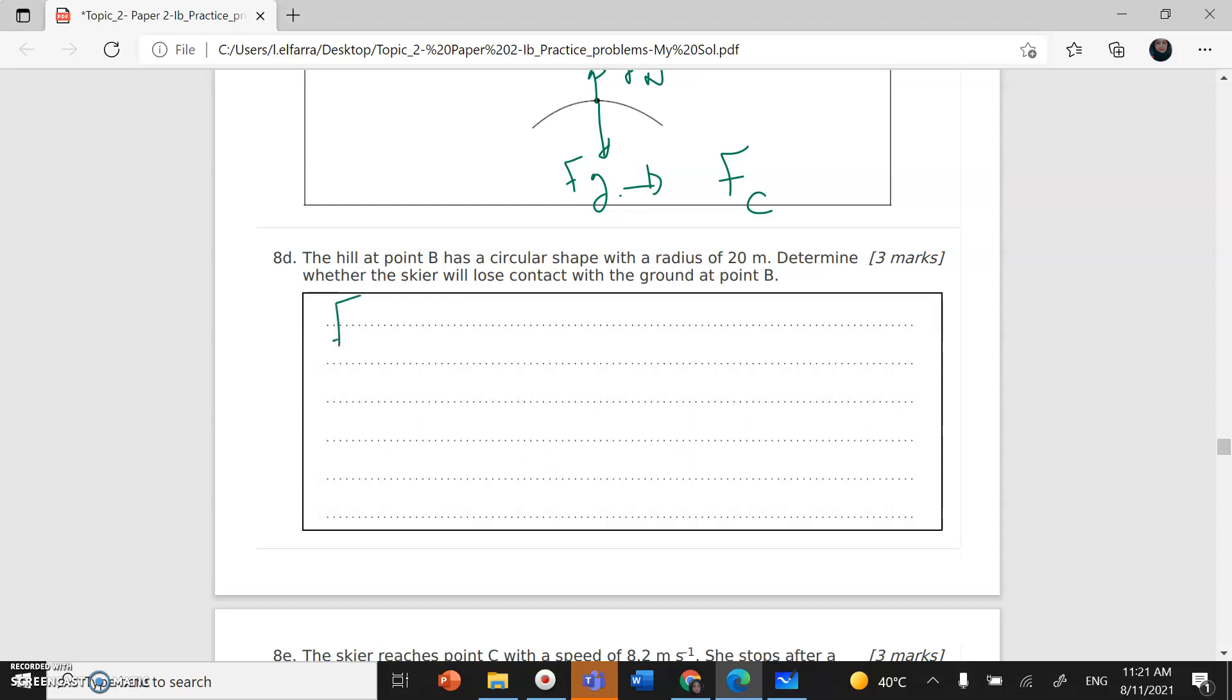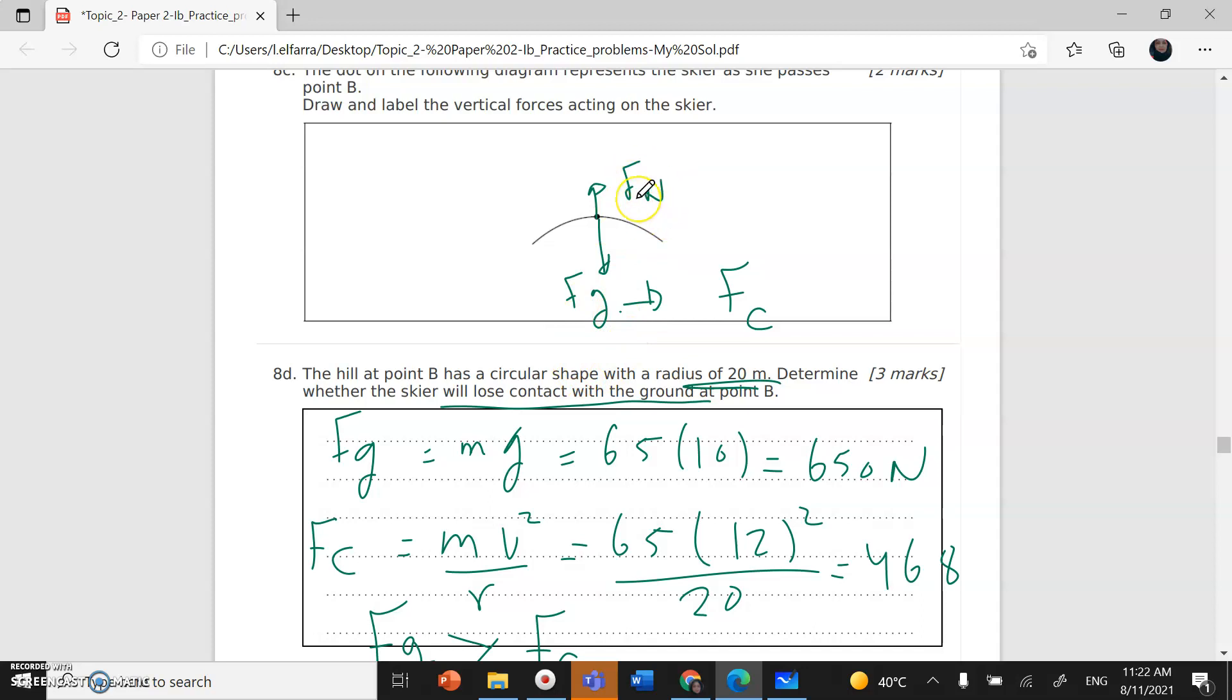Let's calculate FG first. FG is mass times gravity, 65 times 10, which is 650 Newton. Centripetal force is M times V squared divided by R: 65 times 12 squared divided by 20, which gives us 468 Newton. The question asks, determine whether the skier loses contact with the ground. The skier will not lose contact because the weight of the skier is greater than the centripetal force. The resultant of FG and normal force together will give me the centripetal force.